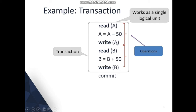Similarly for variable B: Read B, then B = B + 50, and Write B stores the updated value back to the database. At last, there is a commit statement. Commit means all statements have executed successfully and the values are stored in the database, indicating the transaction has completed successfully.